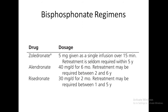These are the bisphosphonate regimens. Zoledronate is given as 5 mg as a single infusion over 15 minutes, and retreatment is seldom required within 5 years. Alendronate is 40 mg per day for 6 months orally, and retreatment may be required between 2 and 6 years. Risedronate is 30 mg per day for 2 months, and retreatment may be required between 1 and 5 years. Zoledronate is the most efficacious drug, with the disease being stable for 5 years after a single dose.